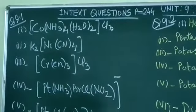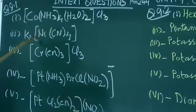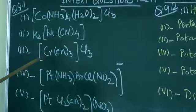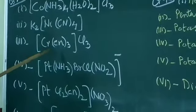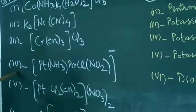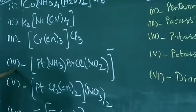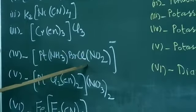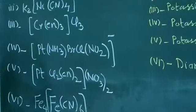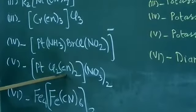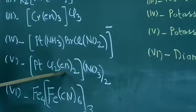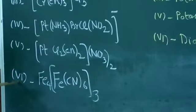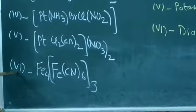The second one is potassium tetracyano nickelate-2. Third is tris-ethane-1,2-diamine-cobalt-3-chloride. Fourth is ammine-pentacyano-cobalt compound.